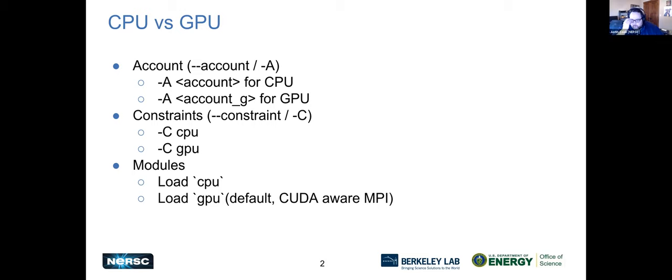Your account is your group number that's in IRIS for whatever project you're working on. You can set the -A option for your account for CPU, or use the underscore _G on your account for GPU. For constraints, you use -C for CPU-only nodes and CGPU for GPU-only nodes.